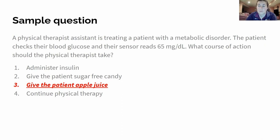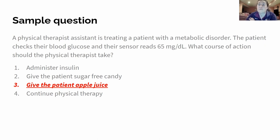Continue physical therapy is wrong because their blood sugar is too low — we need to address that before we continue PT. Give the patient apple juice, wait 15 minutes; let's say it goes up to 78 — we're good, we're on the right track, and we can start treating this patient again.